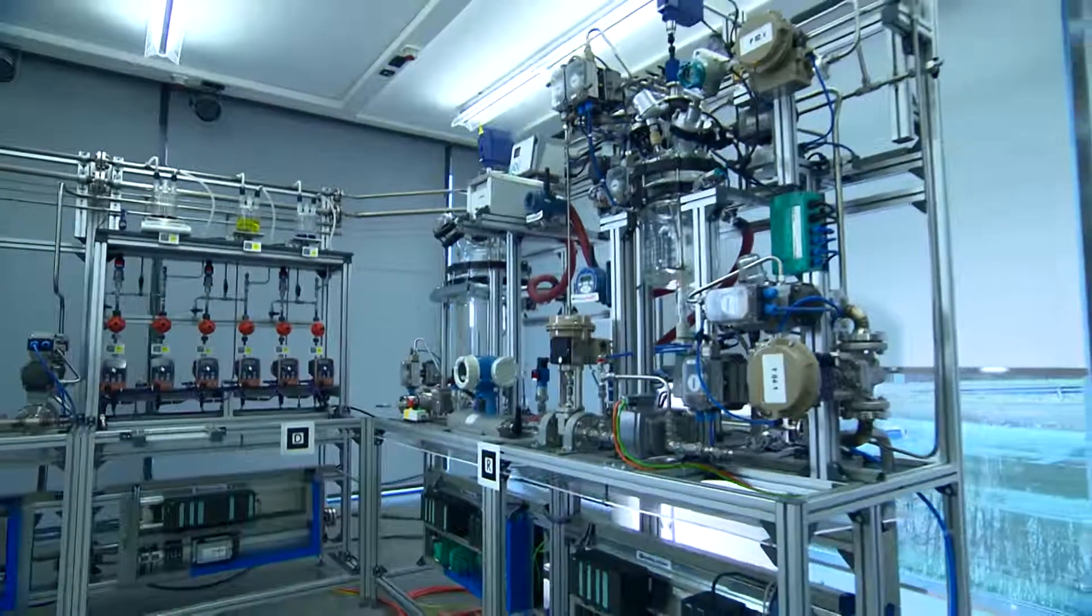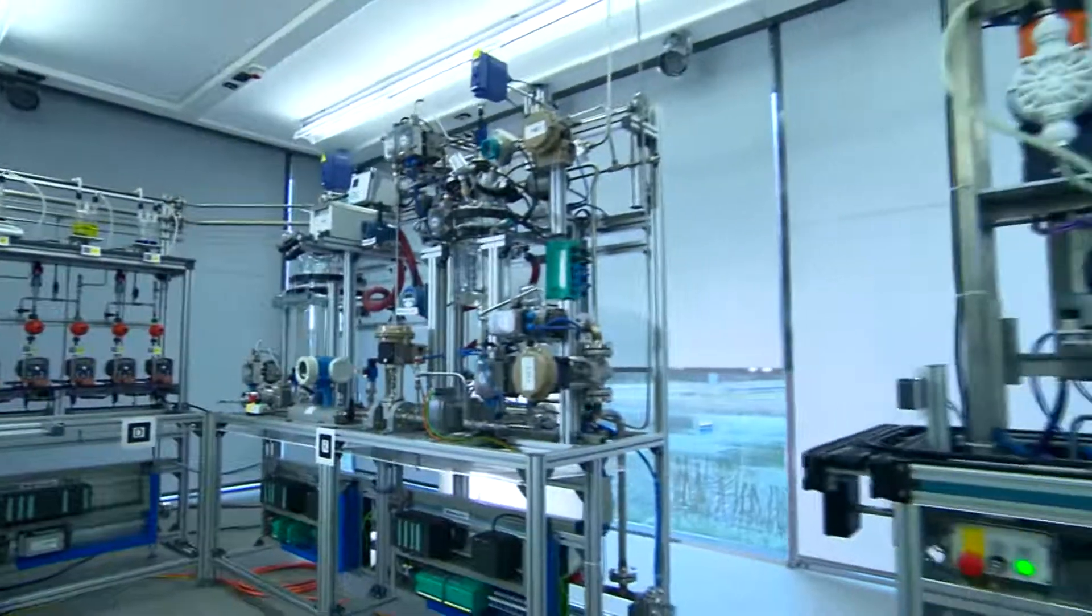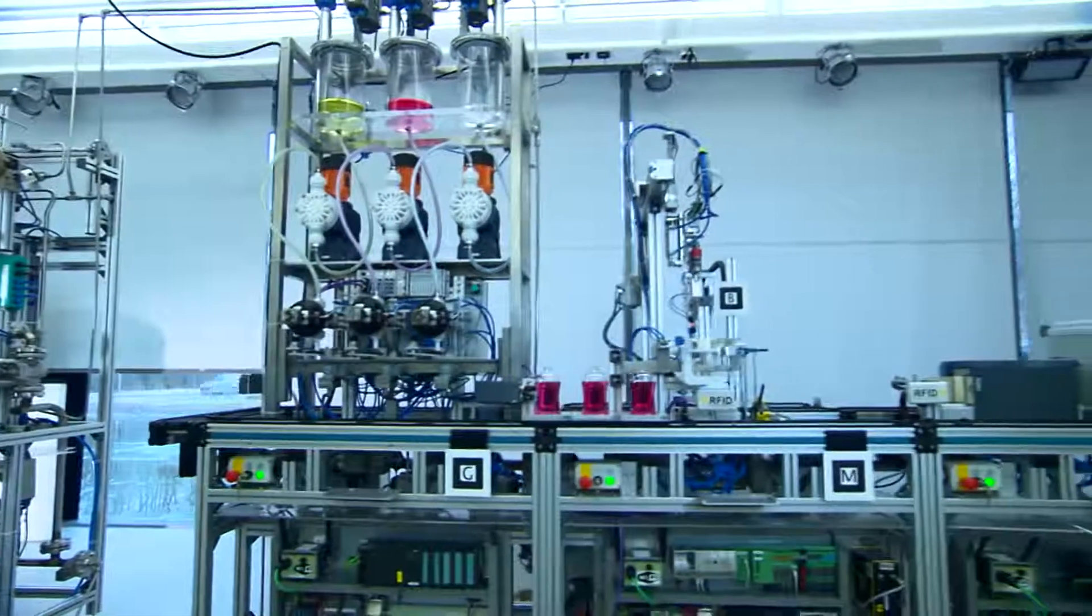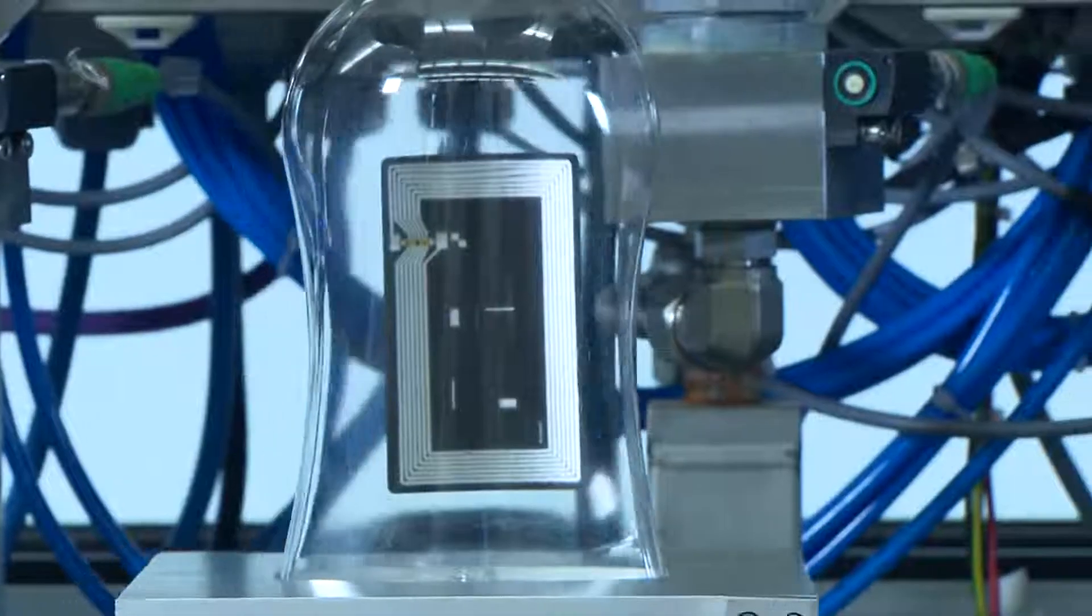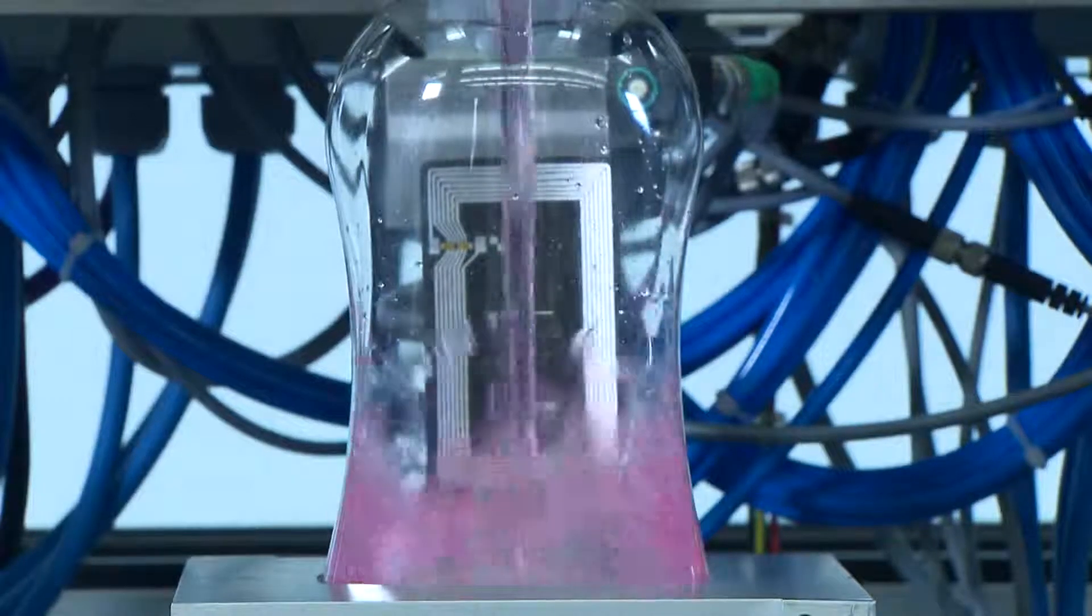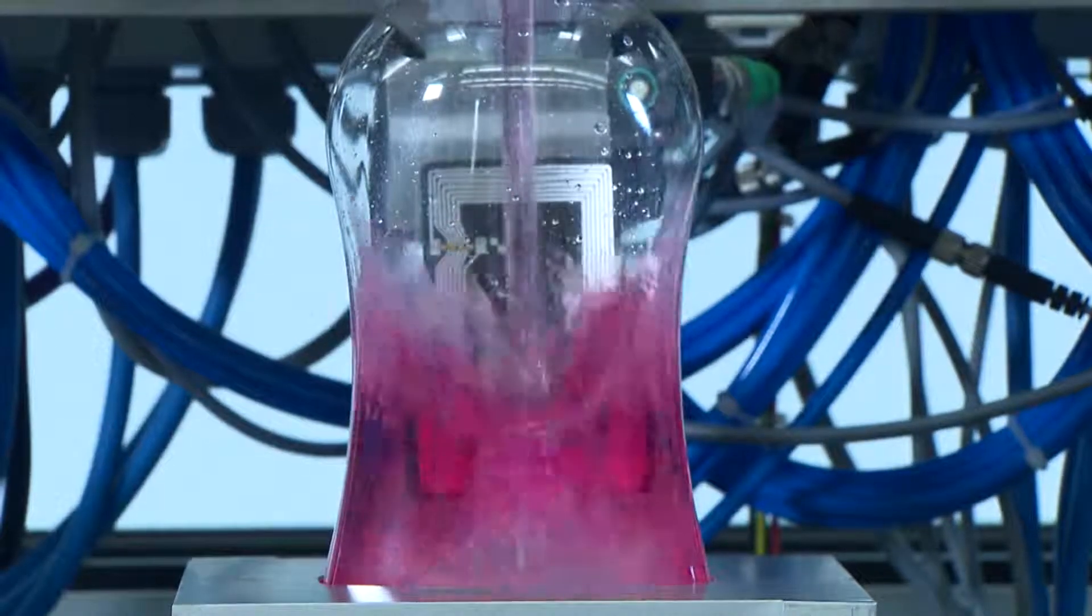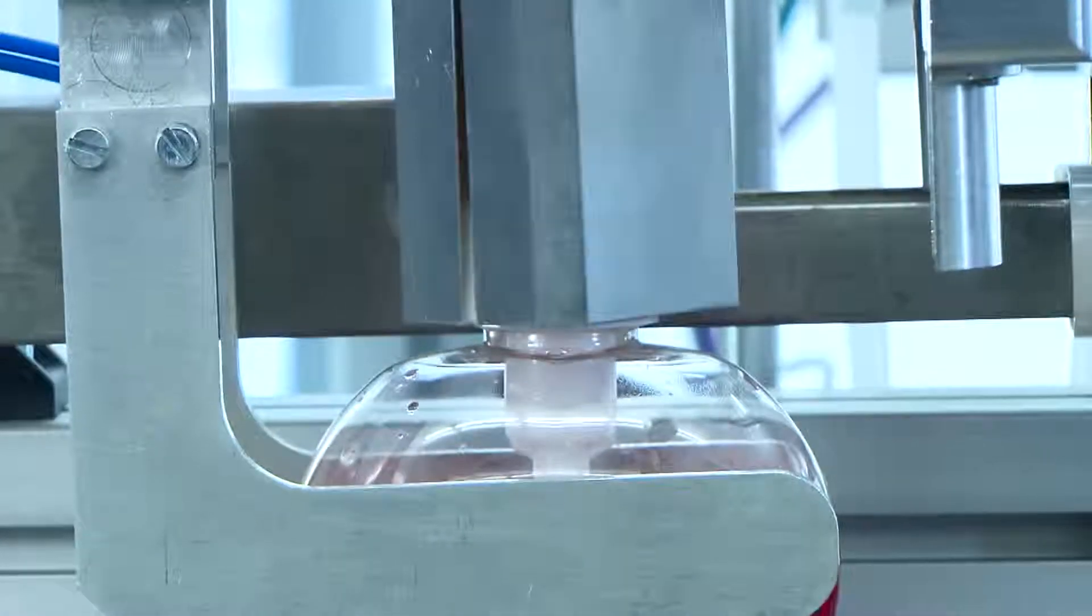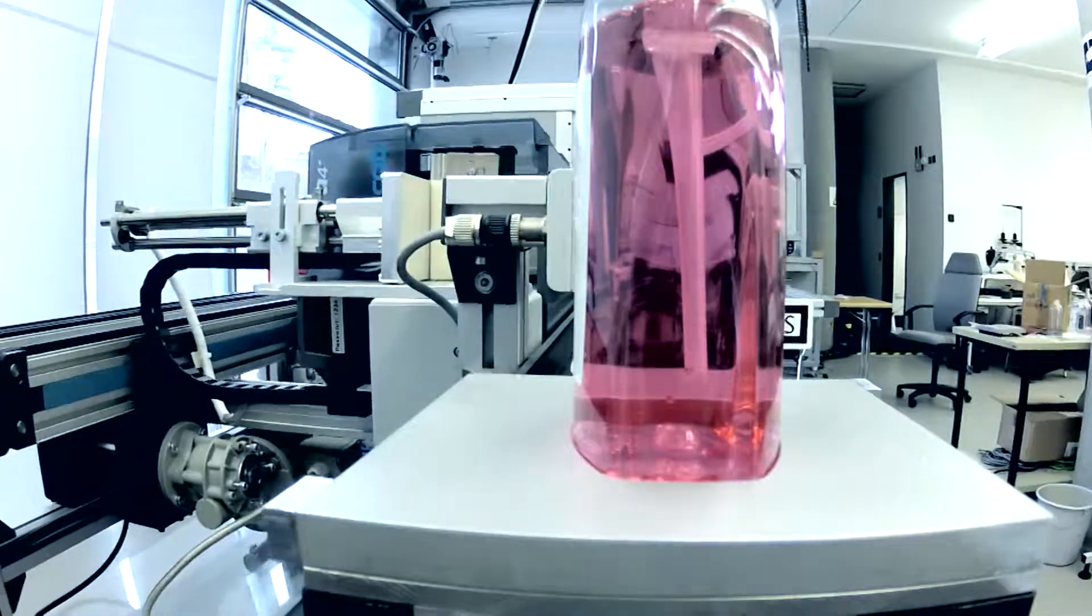A bottling plant for liquids, set up together with Siemens, is used to demonstrate the most important components of the intelligent factory of the future. Each bottle contains an RFID chip storing a precise description of how it has to be processed: which liquid, which lid, and which label.